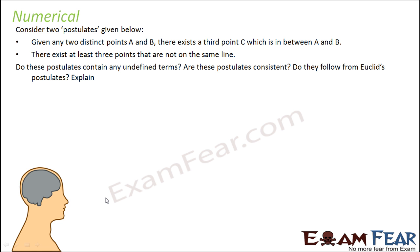Consider two postulates. First: given any two distinct points A and B, there is a third point C which is between A and B. Second postulate: there exist at least three points that are not on the same line. The question is: do these postulates contain any undefined terms? Given two distinct points A and B — the term 'point' is not defined.